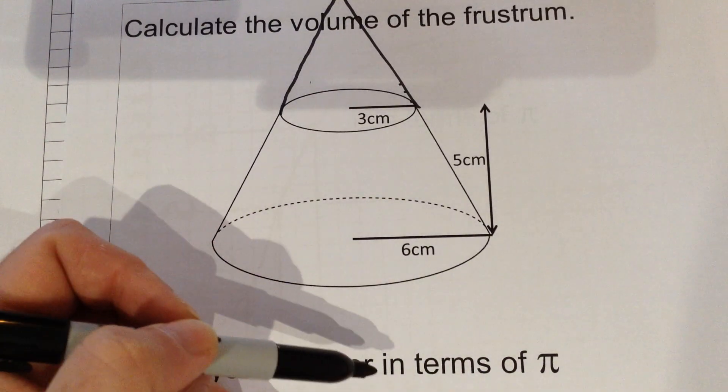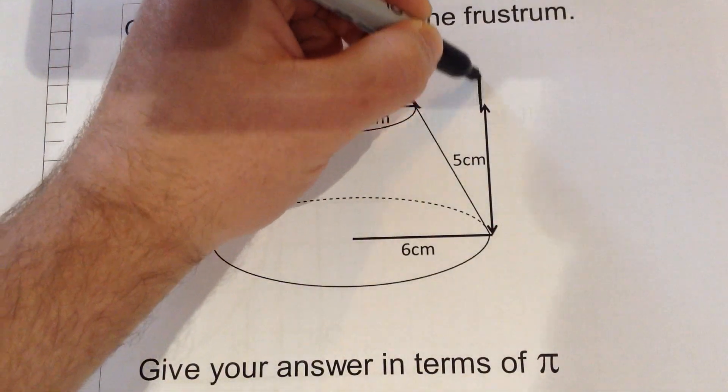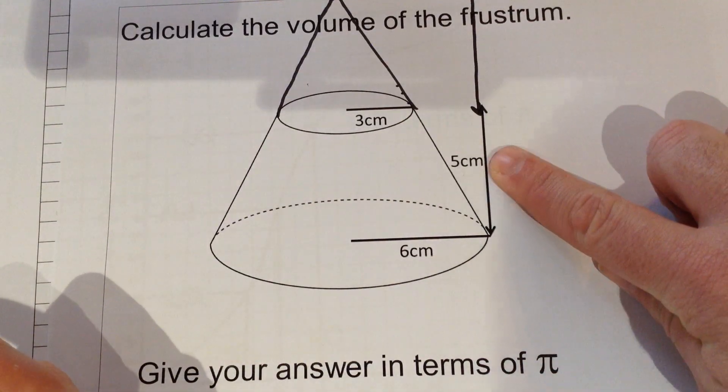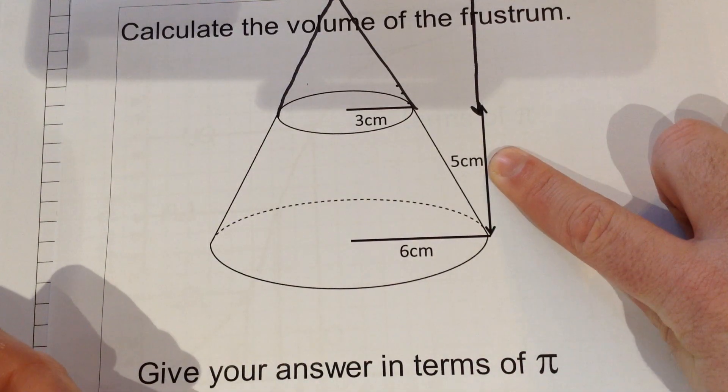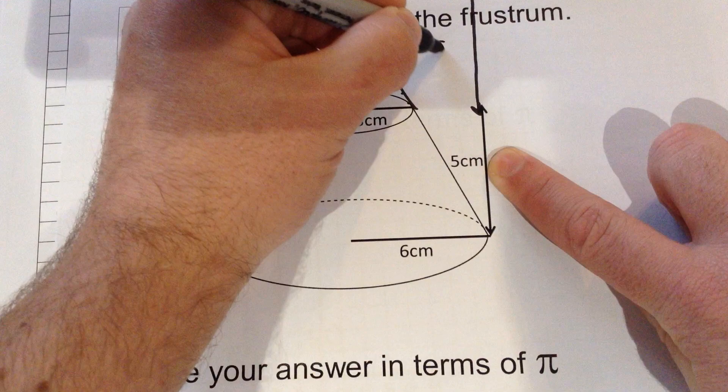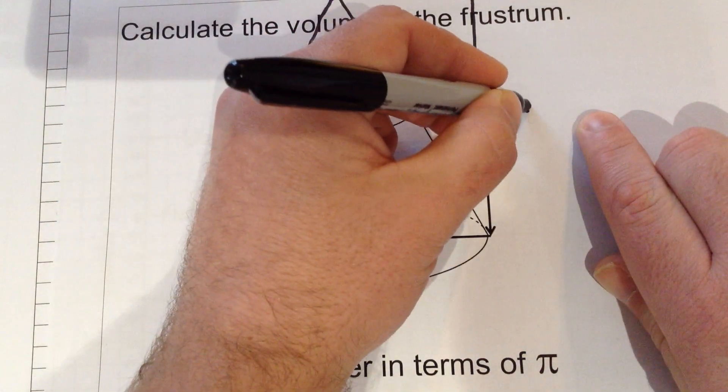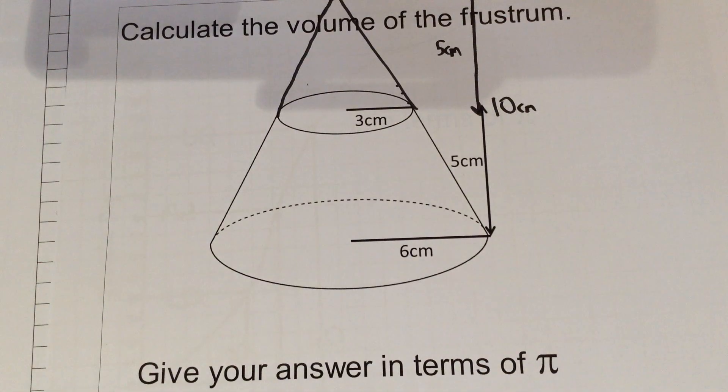So if the lengths are halved, that tells me, by doing a bit of looking at the shape, that if this is 5, that's half of the entire shape, therefore this is also 5, meaning the full cone from top to bottom would have to be 10 centimetres.